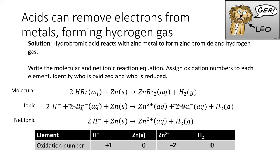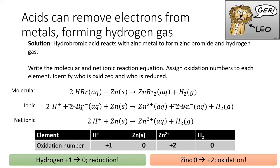Assigning oxidation numbers to these ions is quite easy, since it's just their charge. I see that hydrogen went from +1 to 0, meaning it gained an electron, reduction. And zinc went from 0 to +2, meaning it lost electrons, oxidation.